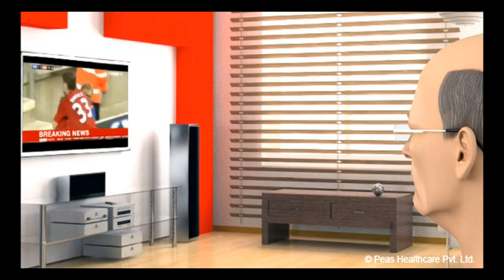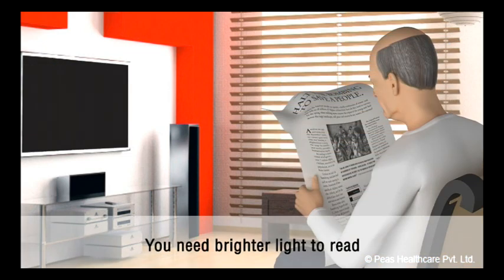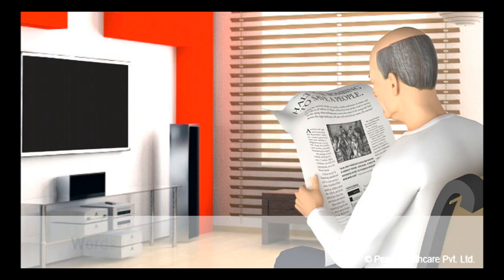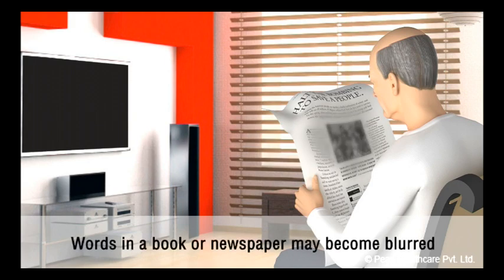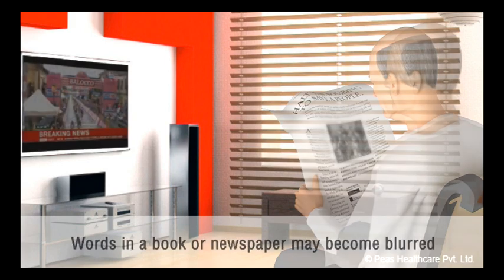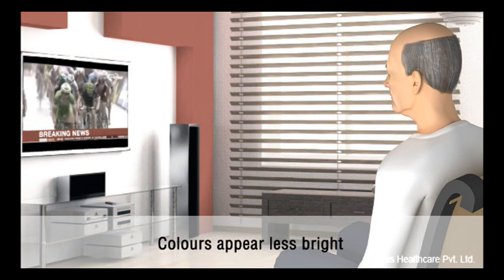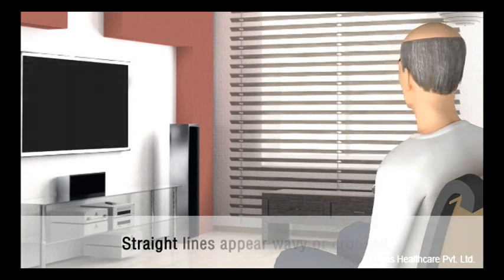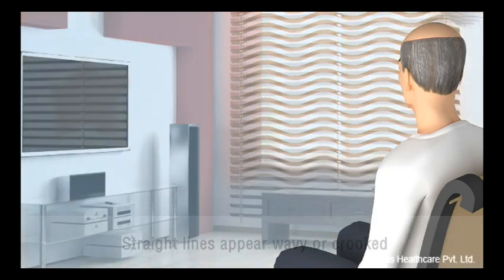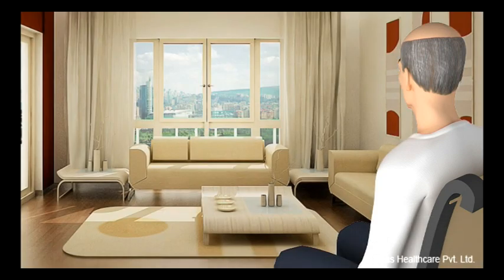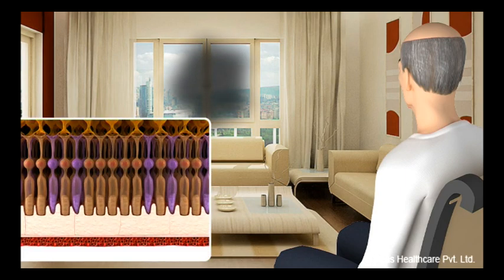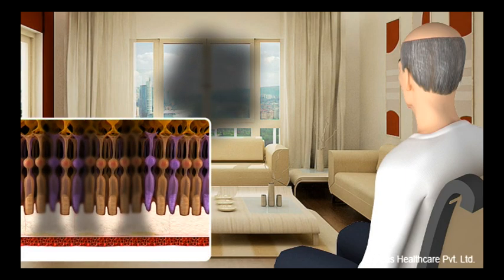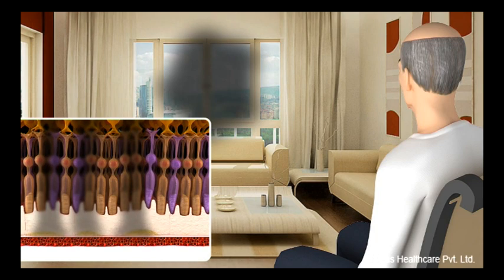You need brighter light to read. Words in a book or newspaper may become blurred. Colours appear less bright. You have difficulty recognizing faces. Straight lines appear wavy or crooked. A blind spot then develops in the middle of your visual field. This tends to become larger over time as more and more rods and cones degenerate in the macula.